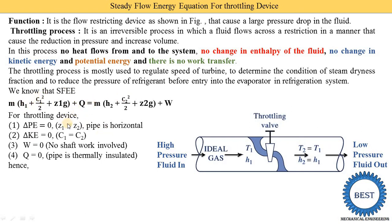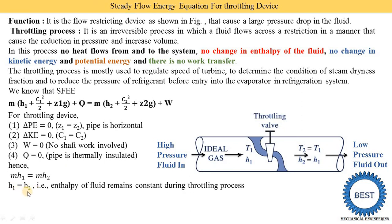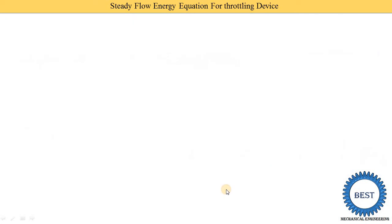What remains is MH1 on the left side equals MH2 on the right side. Since mass M is constant and cancels, we get the final equation: H1 equals H2. When enthalpy remains constant, we call it an isenthalpic process. So inside a throttling device, an isenthalpic process is done — enthalpy of the fluid remains constant during the throttling process.